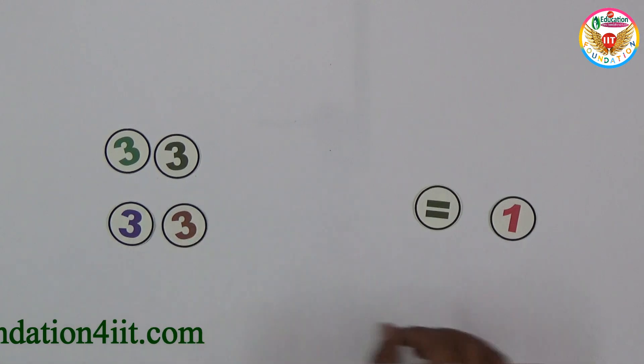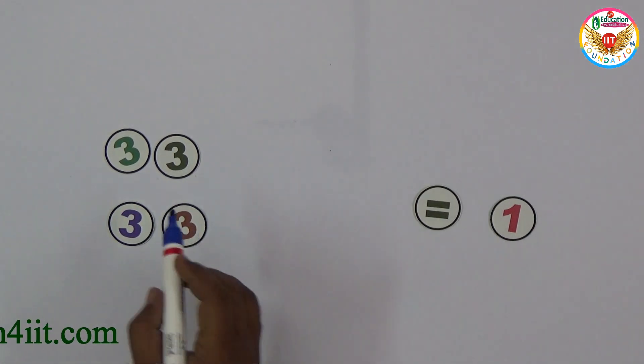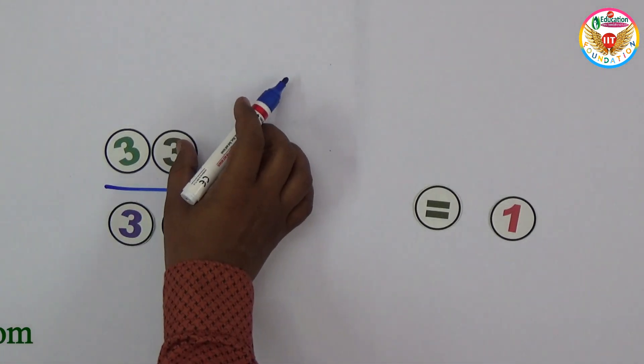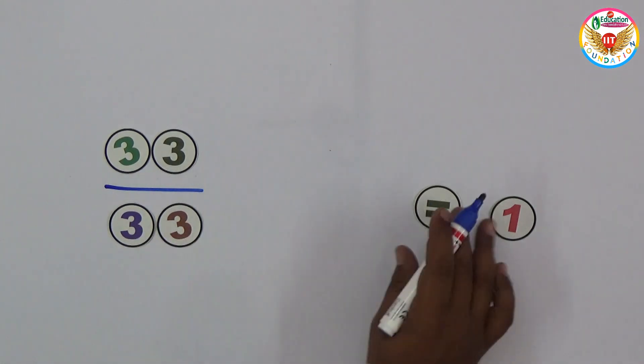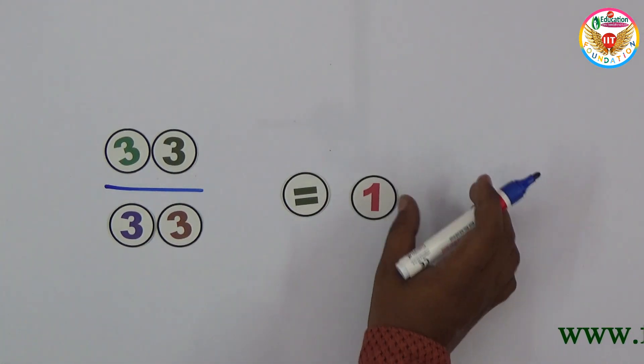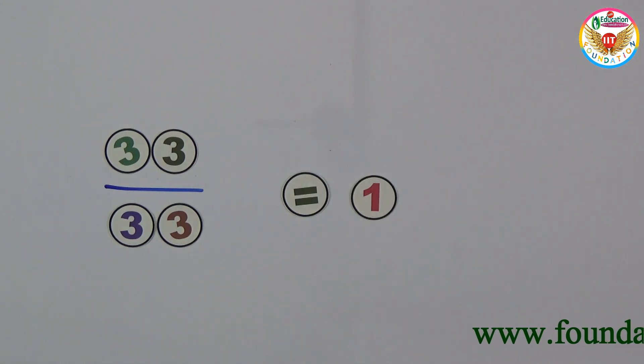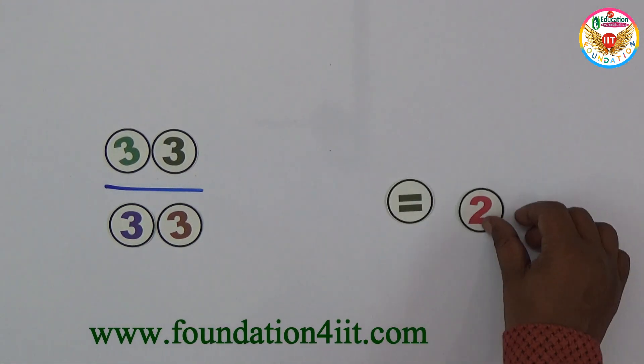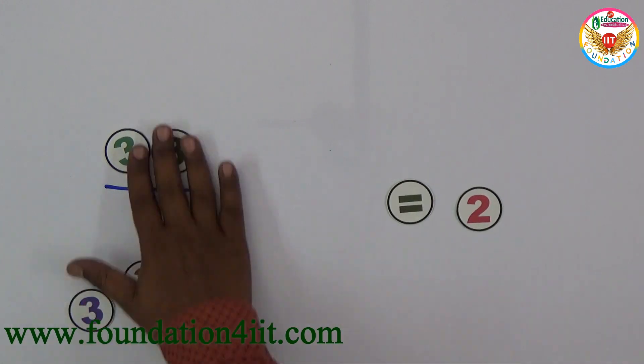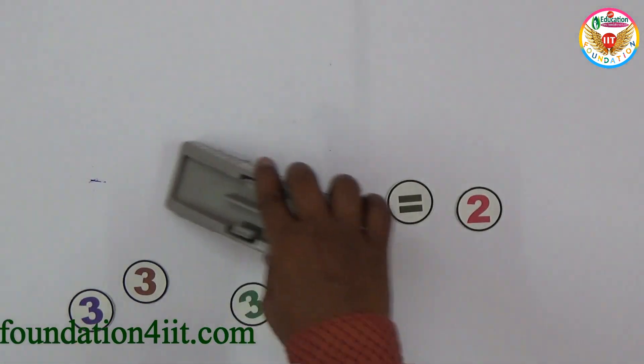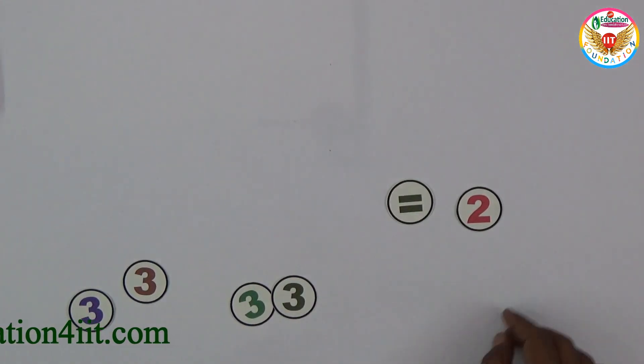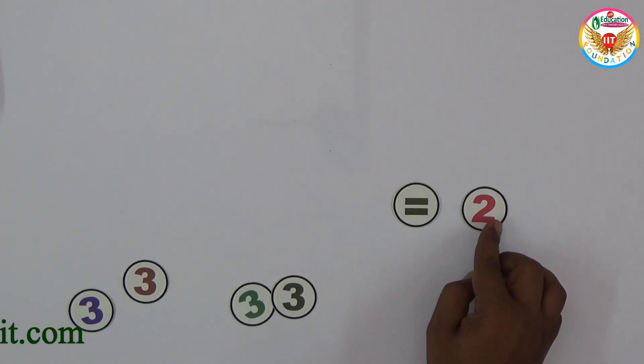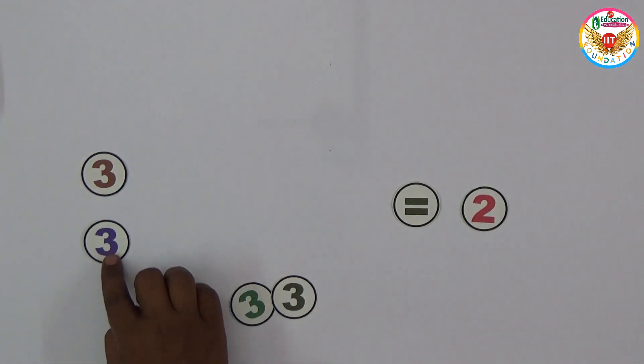33 divided by 33 is equals to 1. And same using 4 threes I need to make it as 2. Now instead of 1 just make it as 2 with same 4 threes. Let me show the solution. We know that 2 is 1+1 is 2, so we can make it simple like this.